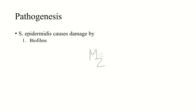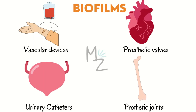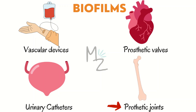Pathogenesis: Staphylococcus epidermidis causes damage by biofilms. Bacteria on any device like a catheter or prosthetic device releases EPS, which makes it resistant against antibiotics and the immune system. It forms biofilms on vascular catheters, urinary catheters, prosthetic heart valves, and prosthetic joints. These biofilms are responsible for causing infection.